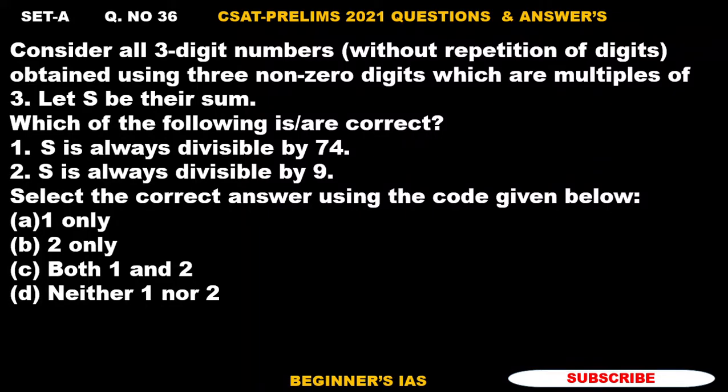Hello aspirants. Let us discuss question number 36. Consider all three digit numbers without repetition of digits obtained using three non-zero digits which are multiples of three. Let S be their sum. Which of the following is or are correct? S is always divisible by 74, S is always divisible by 9. Select the correct answers.